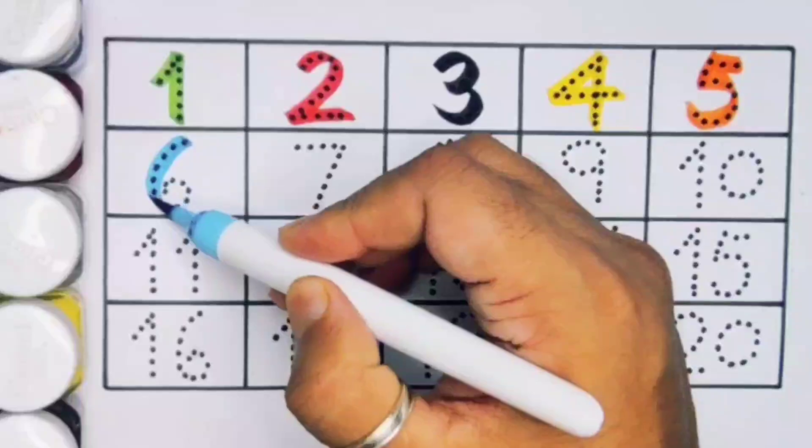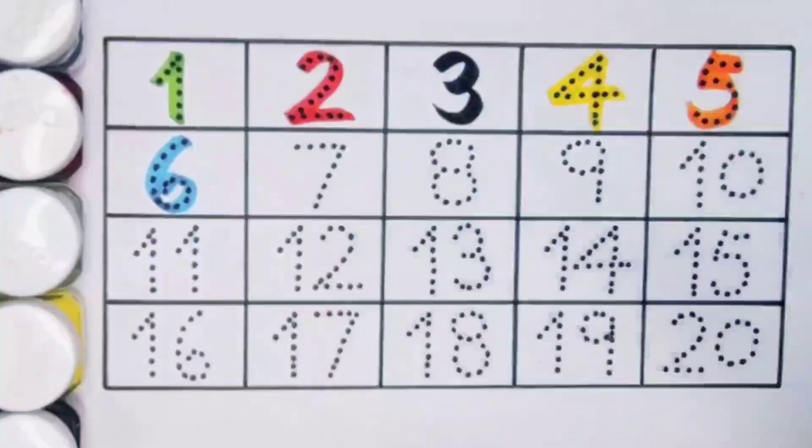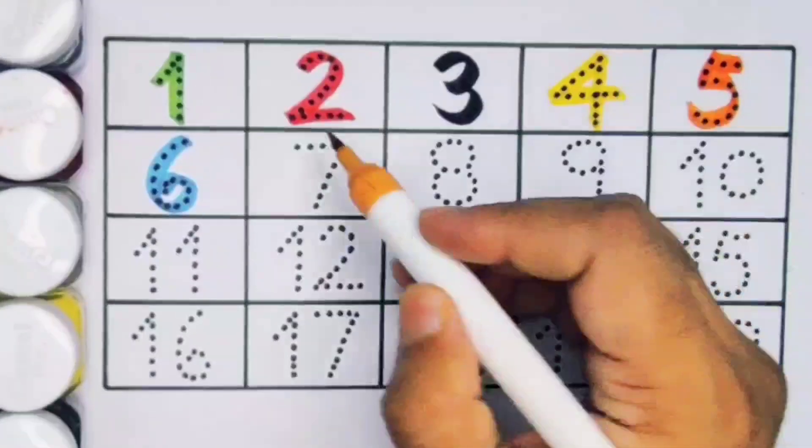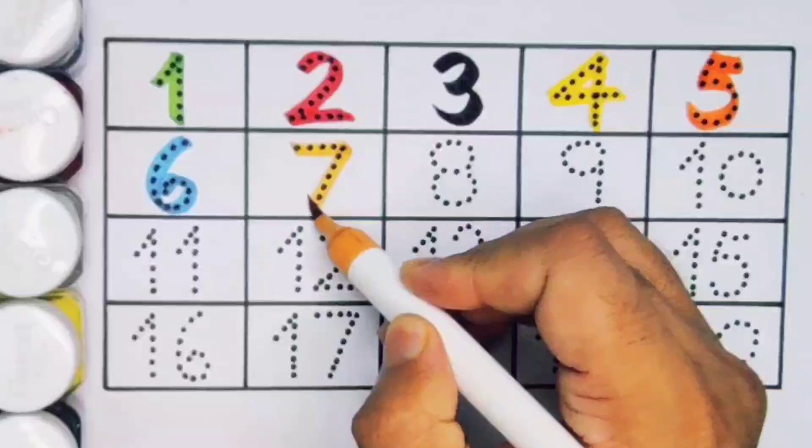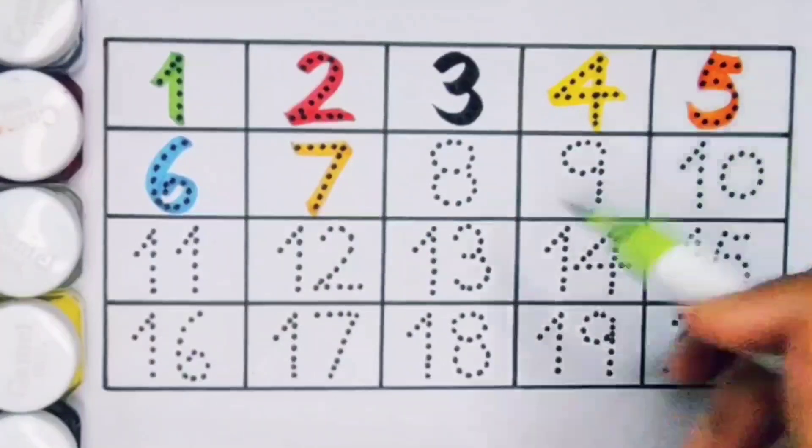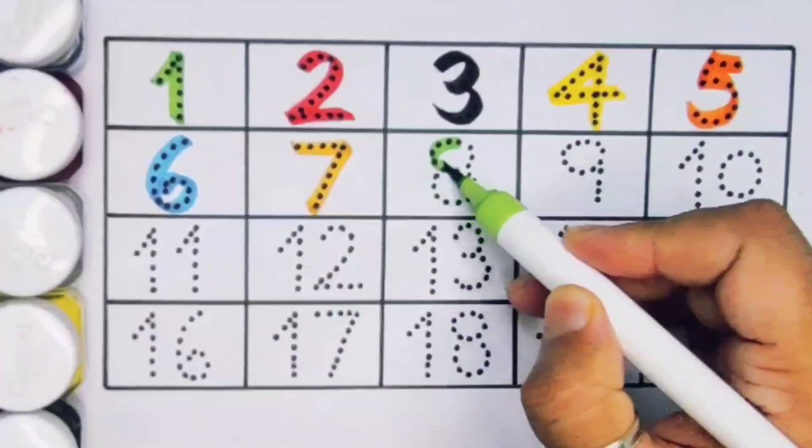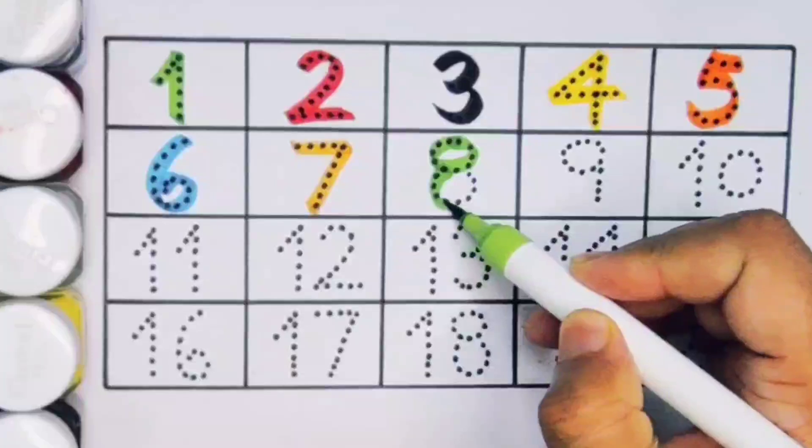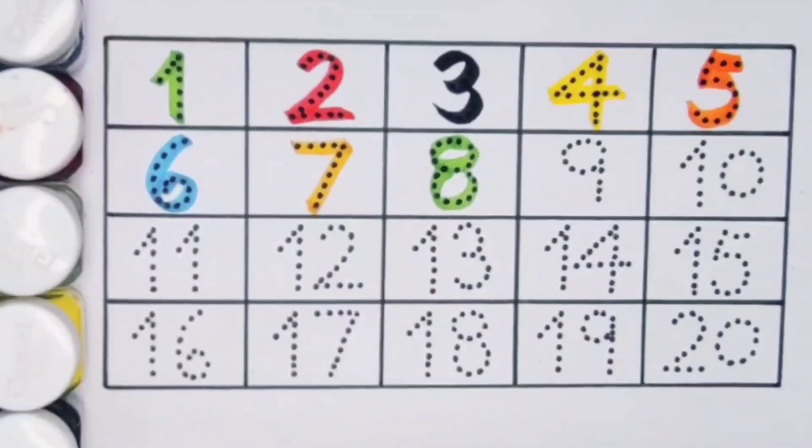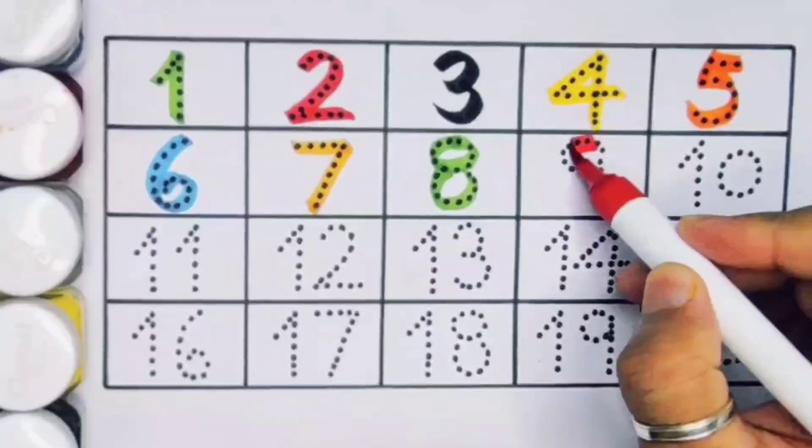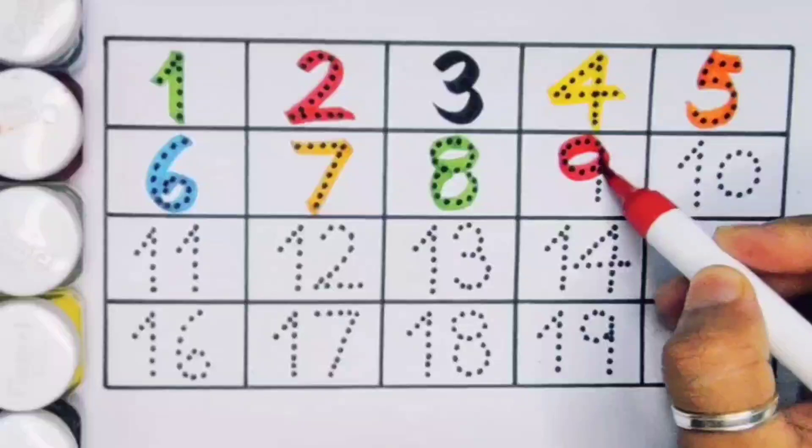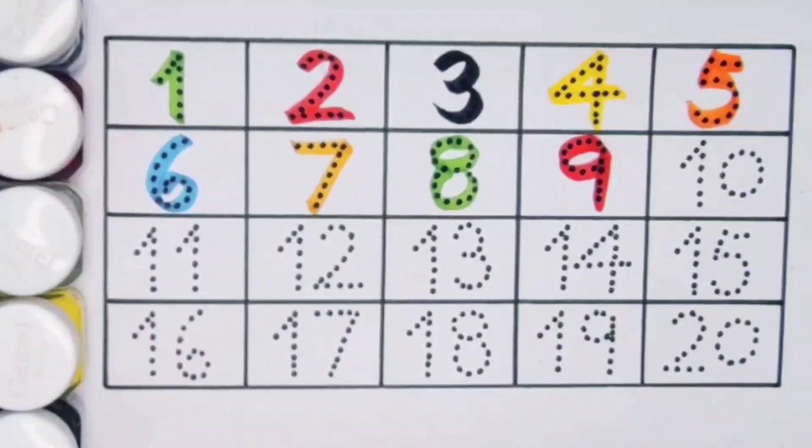Next kids, seven, number seven. Next, eight, number eight. Next, nine, number nine. Next, ten, one zero ten, number ten.